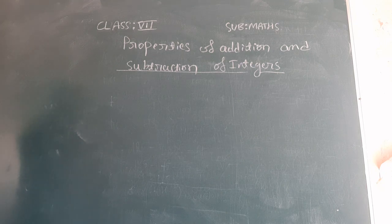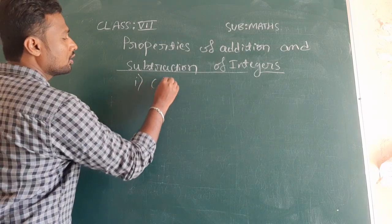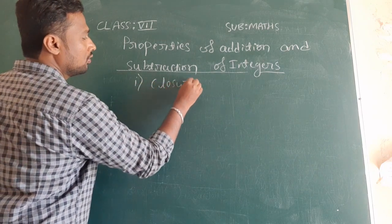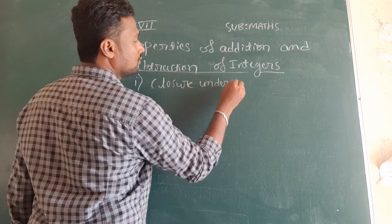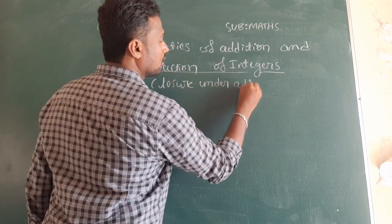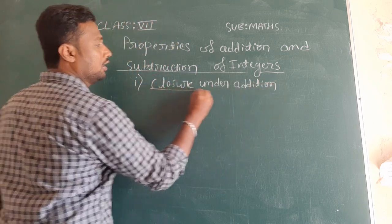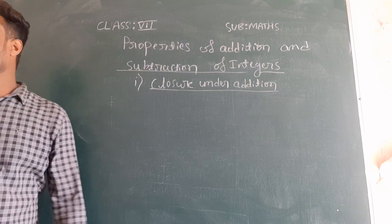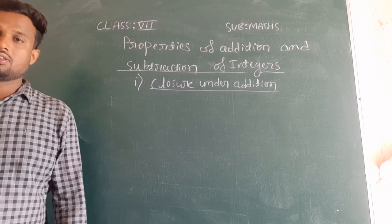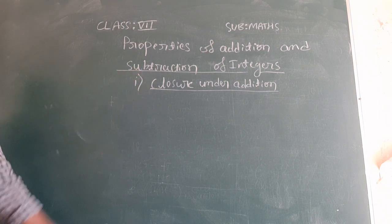First we will start with the closure property. I hope you all remember this property — closure under addition. We already discussed closure property in a previous class. Now we will check this closure property for integers, specifically for addition.